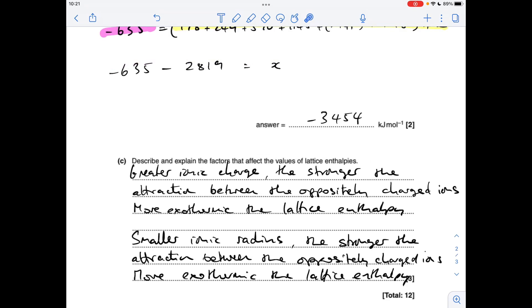Finally, describe and explain the factors that affect the values of the lattice enthalpies. Well, the two factors are the ionic charge and the ionic radius. So we'll start with ionic charge. The greater the ionic charge, the stronger the attraction between the oppositely charged ions in that lattice. And then the more exothermic the lattice enthalpy will be.